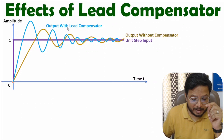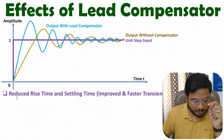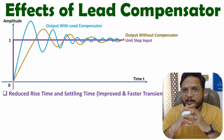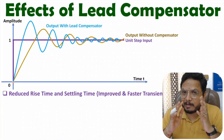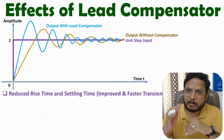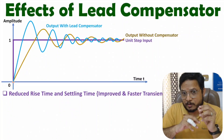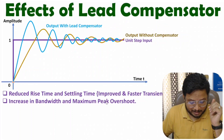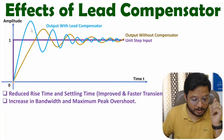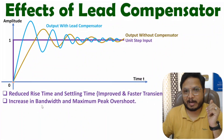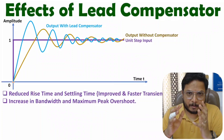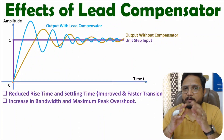If you observe one more thing — with Lead Compensator, we have higher maximum peak overshoot. So with Lead Compensator, there will be reduced rise time and settling time, which means we have a faster response. So if we need a faster response, we add Lead Compensator along with the system, where we will be having lower rise time — meaning there will be faster switching operation with the given system. Here you will be observing there will be an increase in bandwidth and maximum peak overshoot. With Lead Compensator, maximum peak overshoot is increasing and there will be an increase in bandwidth. The reason is, with Lead Compensator, we will be having a response which is similar to a high pass filter, so there will be increase in bandwidth.